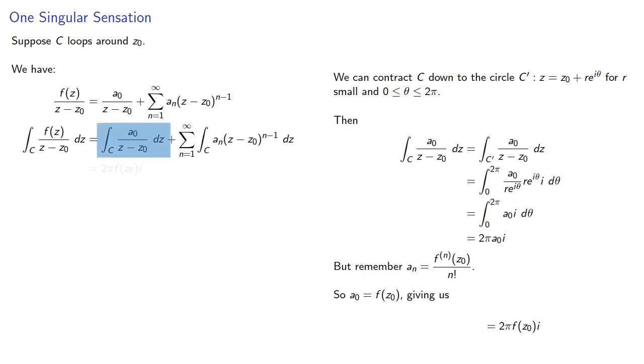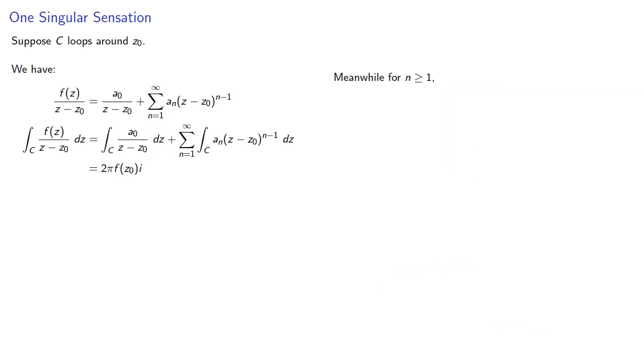And so this first integral will be 2πi f. Meanwhile if we consider the terms of this series they're all integrals of z minus z0 to some power and n is greater than or equal to 1. And it turns out we can compute these are all equal to 0.